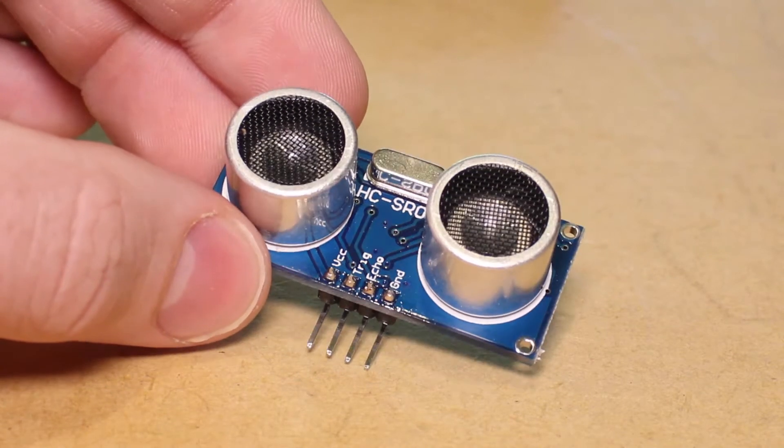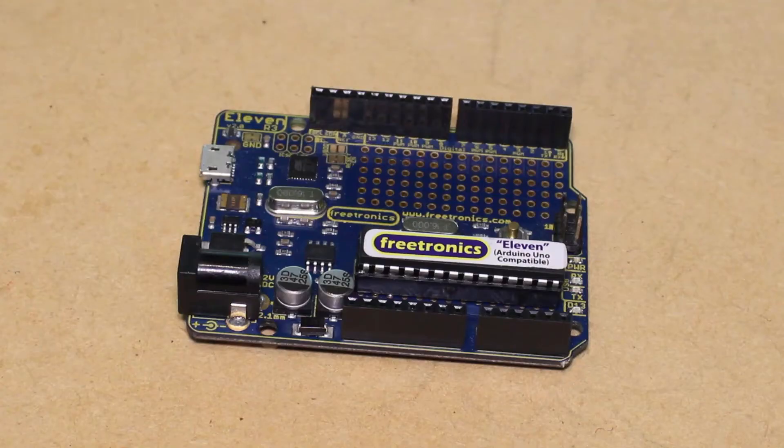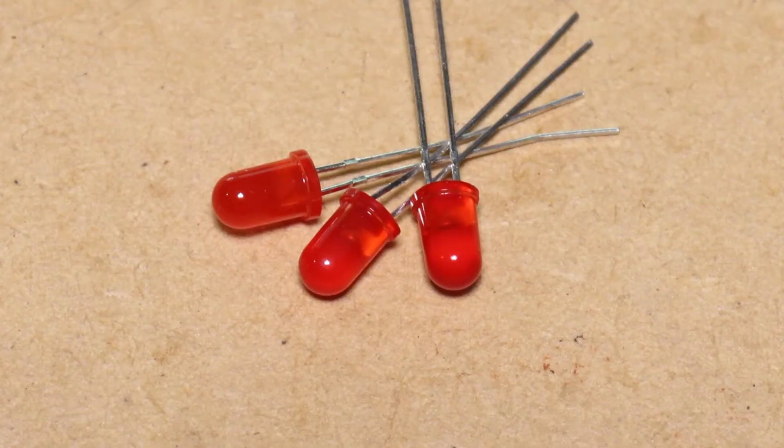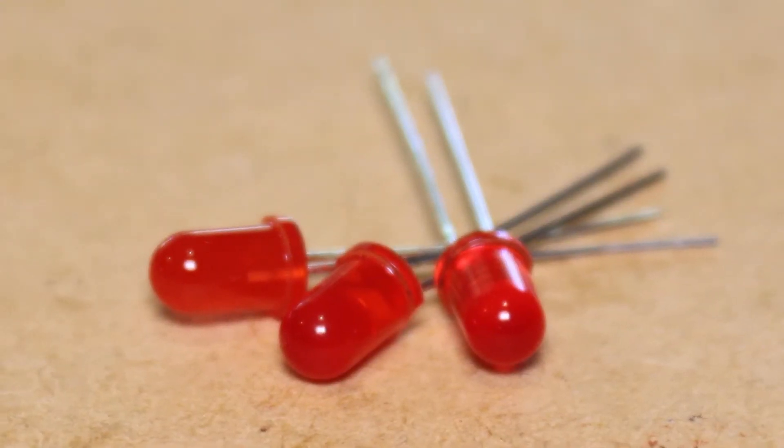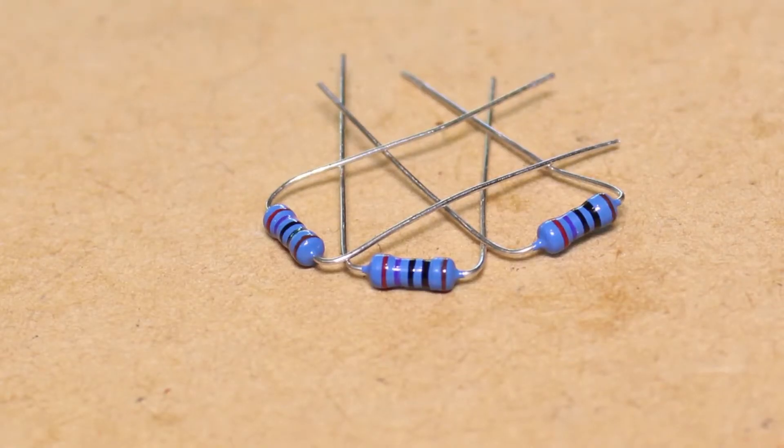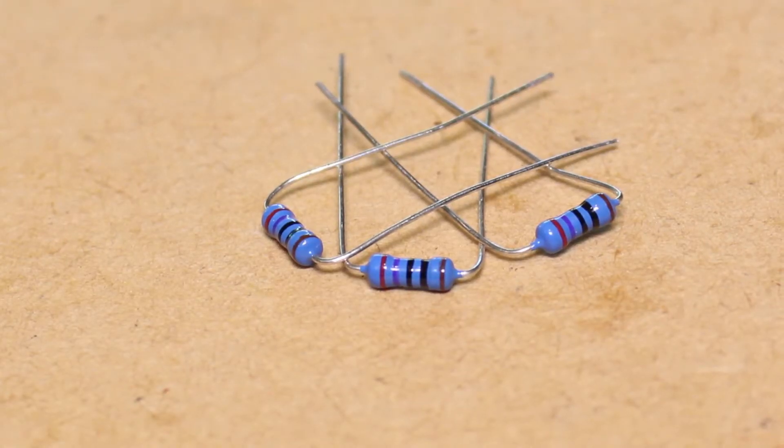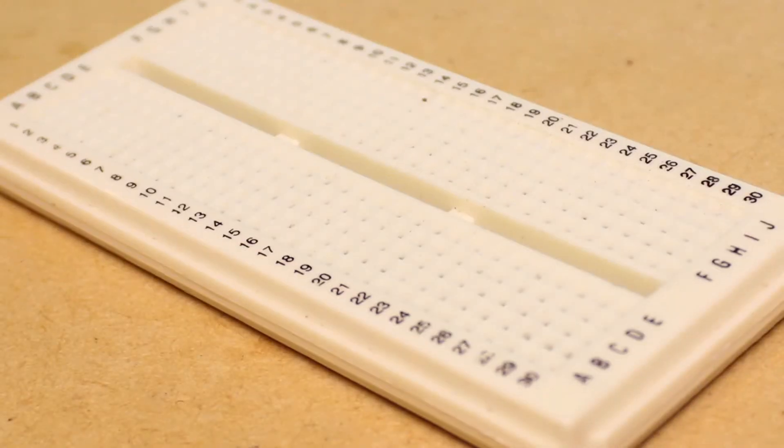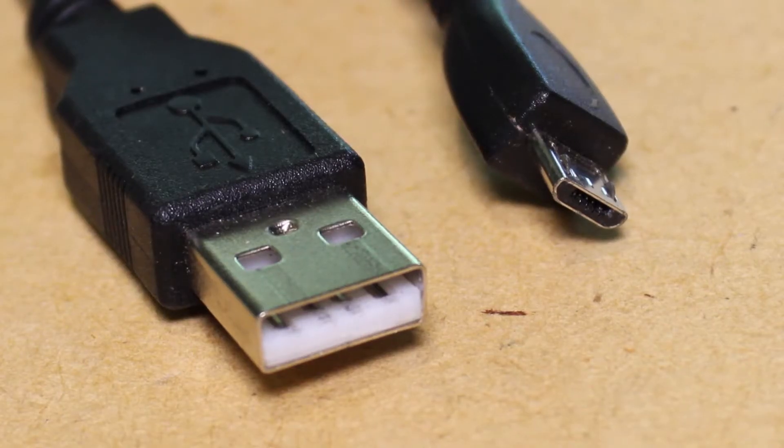To test out the ultrasonic distance sensor, you'll be needing an Arduino, three LEDs, some male to male jumper wires, three 270 ohm resistors, a breadboard, and an appropriate USB cable.